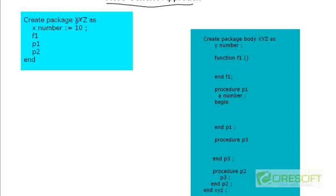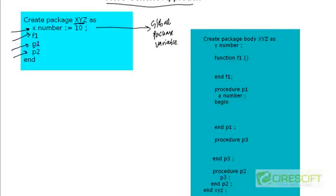This is what a more generic package is going to look like. I have a package named XYZ, and I have a variable x of type number assigned to 10. This is called a global package variable. In the package specification, I have declared that there is a global variable x, a function f1, and procedures p1 and p2.